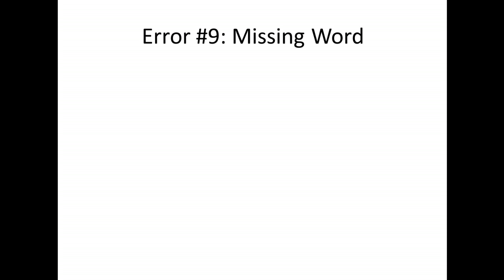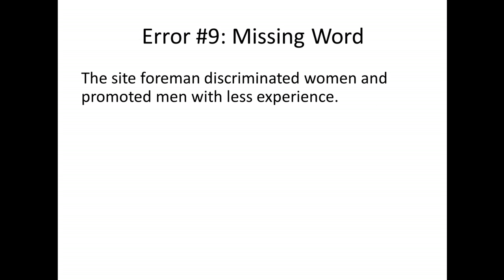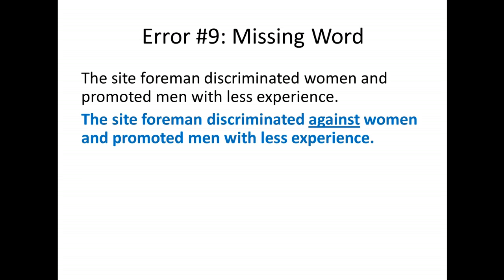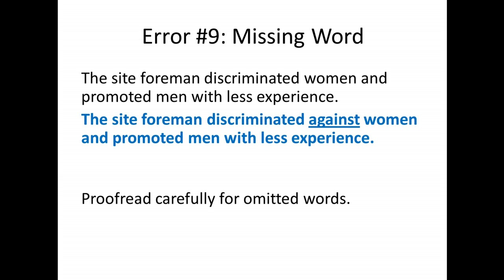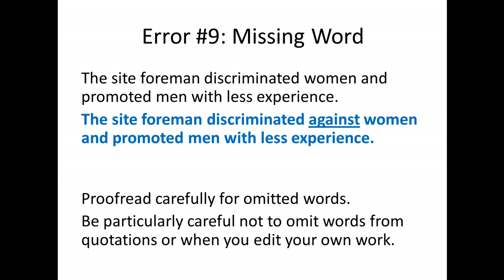Number nine is a missing word, and this happens when you're editing. 'The site foreman discriminated women and promoted men with less experience' is missing the word 'against' — it should be 'discriminated against women.' Proofread carefully for omitted words, and be particularly careful not to omit words from quotations when copying them. When you edit your own work, this is most likely to happen — you changed something and in doing so left out a word. Read word for word very carefully. The eye fills in words for us sometimes that aren't there.